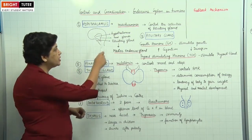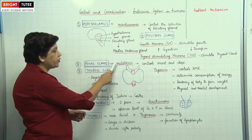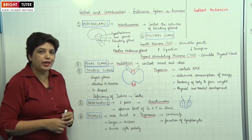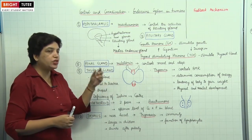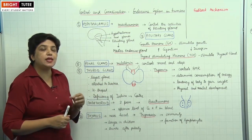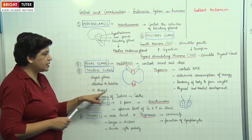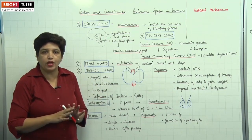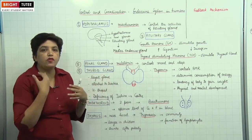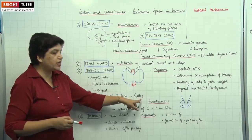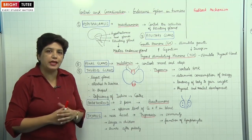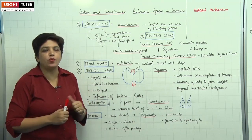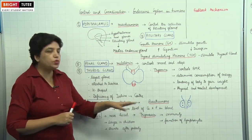The third gland is the pineal gland, also present near the hypothalamus in the brain. It secretes the hormone melatonin, which controls mood and sleep. The fourth is the thyroid gland, present in the neck region attached to the trachea below the larynx. It is the largest endocrine gland, roughly H-shaped with two lobes. Deficiency of iodine causes this gland to enlarge, resulting in swelling of the neck — a condition known as goiter, common in northern hilly regions. Common salt is now compulsorily iodized to reduce goiter incidence.